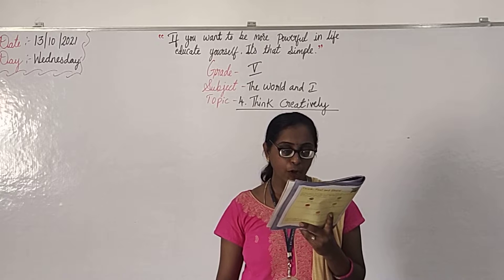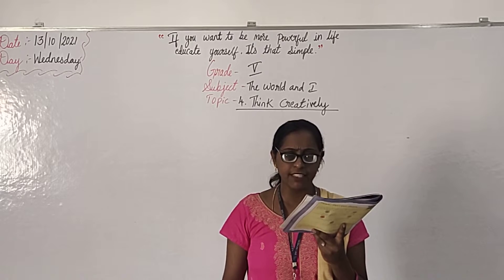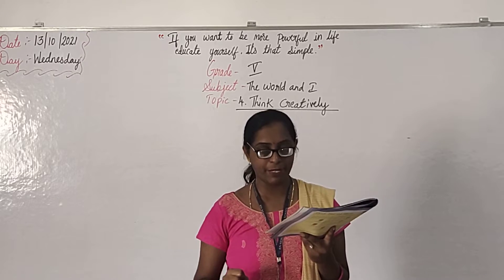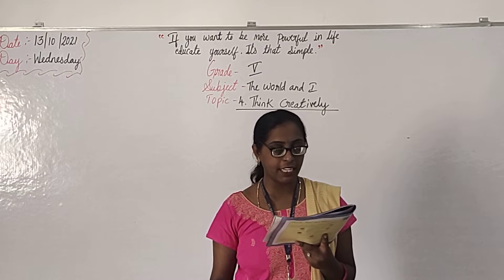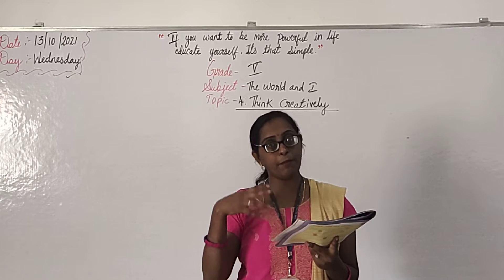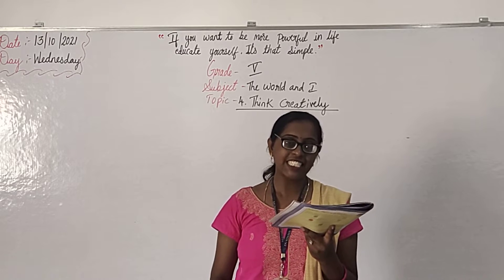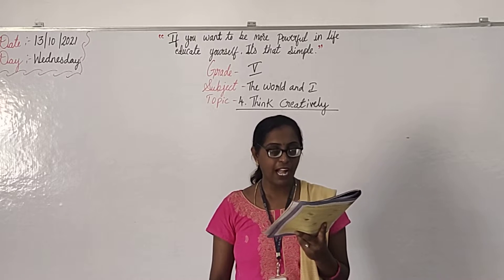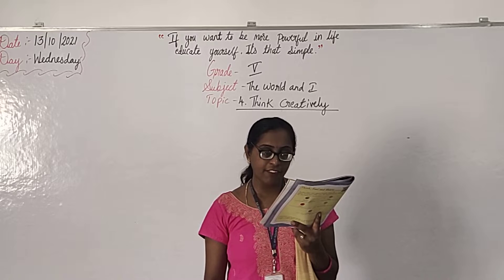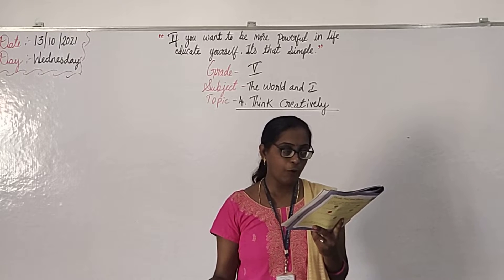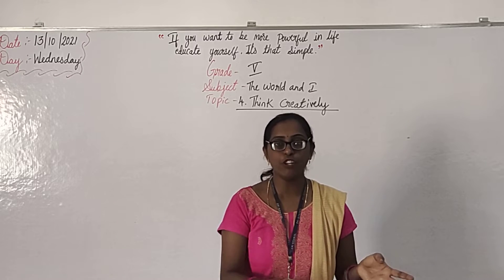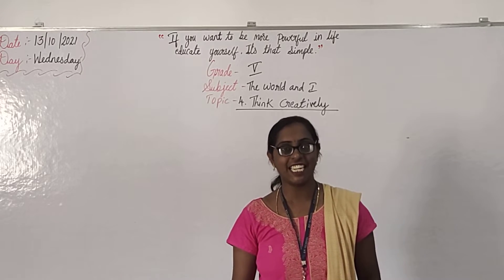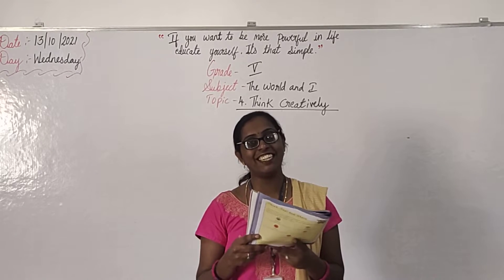You have a bowl with 5 apples. You take away 3 apples from it. How many apples would you have? You will still have 5 apples. Because the bowl is yours and the apples in your hand are also yours. So 5 only. Creatively, you should think of the answers.